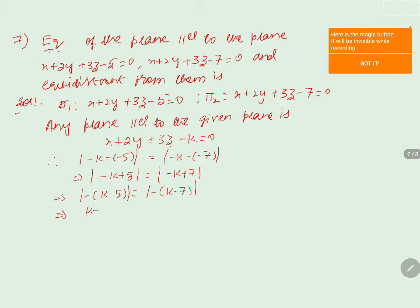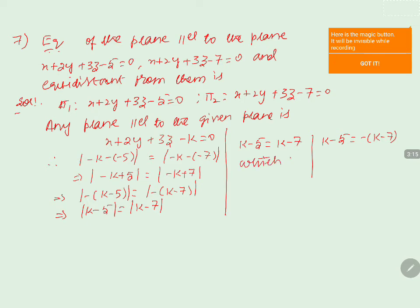This gives us |k - 5| = |k - 7|, leading to two cases. Case 1: k - 5 = k - 7, where k cancels and we get -5 = -7, which is not possible, so we ignore this case. Case 2: k - 5 = -(k - 7), giving 2k = 7 + 5 = 12, so k = 6.